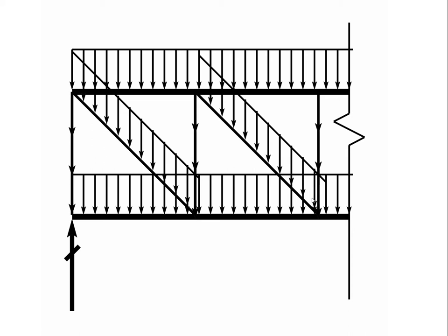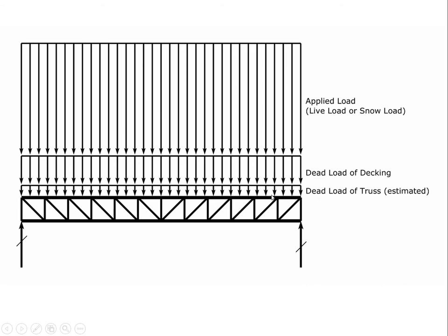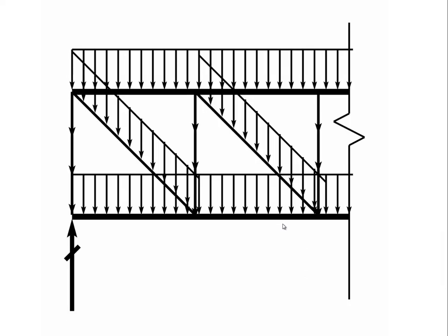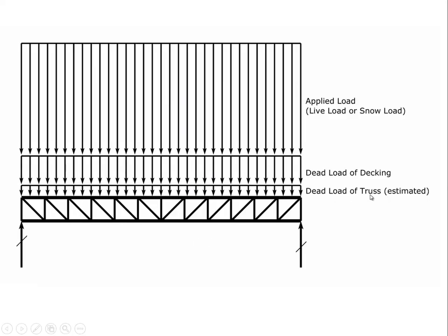We could account for the highly distributed load by putting the dead load of the truss on top of the truss, but actually that dead load is distributed through the truss. If we were being absolutely rigorous, we would put the self weight of the truss members on the members themselves. Typically in the past we haven't done this because the self weight is really low, but in computer simulation it's done automatically by assigning weight to each web member, top chord, and bottom chord. When doing hand calculations we estimate the total self weight and put it all on the top chord, which turns out to be a pretty accurate computational method.